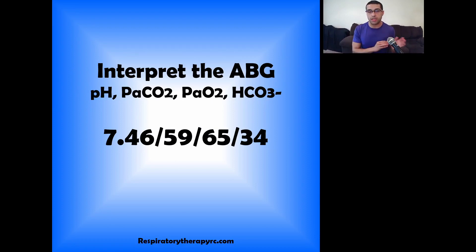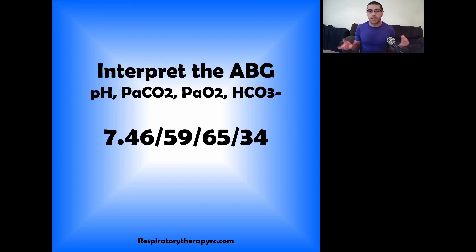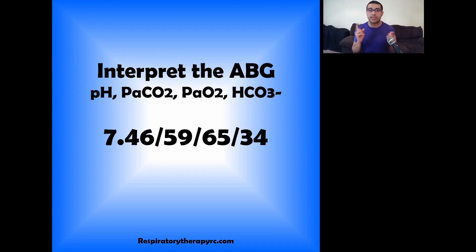So we would assign it metabolic alkalosis. But is it compensated? Meaning, is the CO2 out of range and is it trying to compensate? And it is out of range — it's outside the 35 to 45 range. So we would say partially compensated. Not fully — we would say partially because the CO2 is out of range, but the pH is still not normal. If it was normal in the 7.35 to 7.45 range, we would say it is fully compensated. But because it's not, the CO2 is trying to bring the pH back into a normal range.